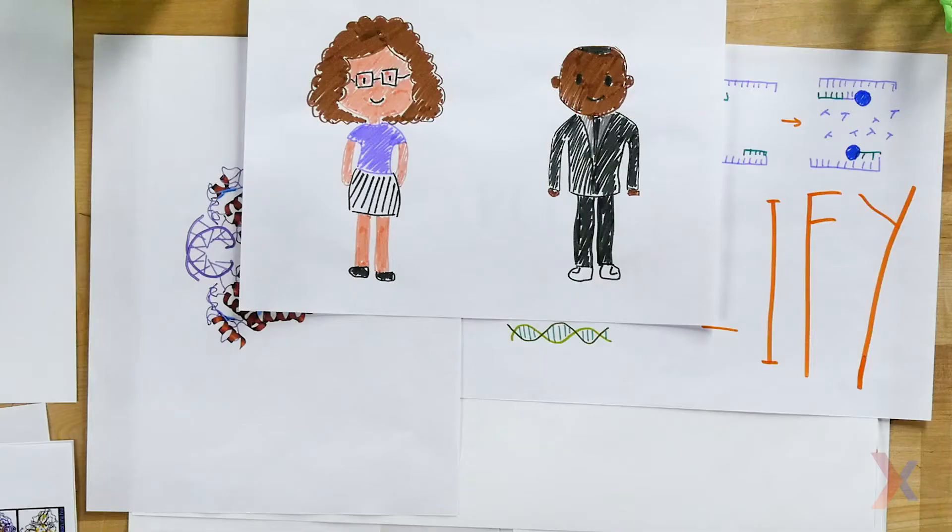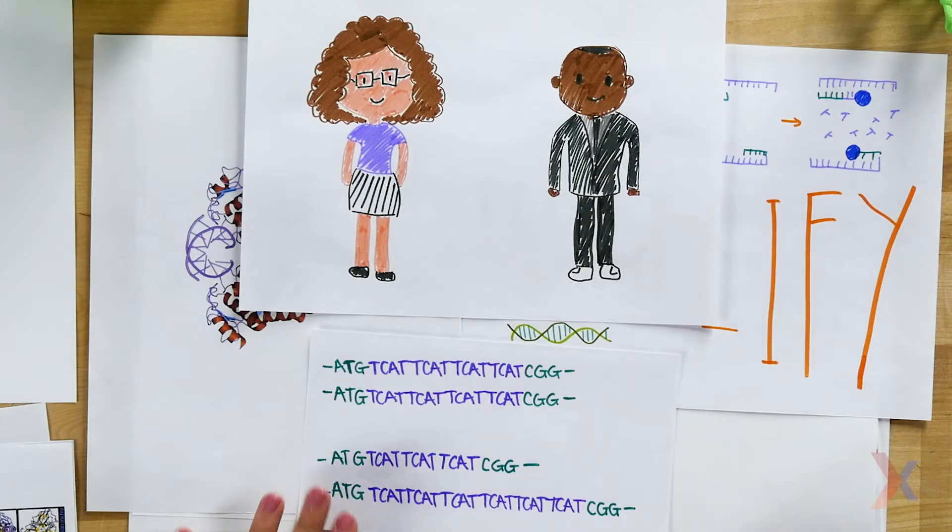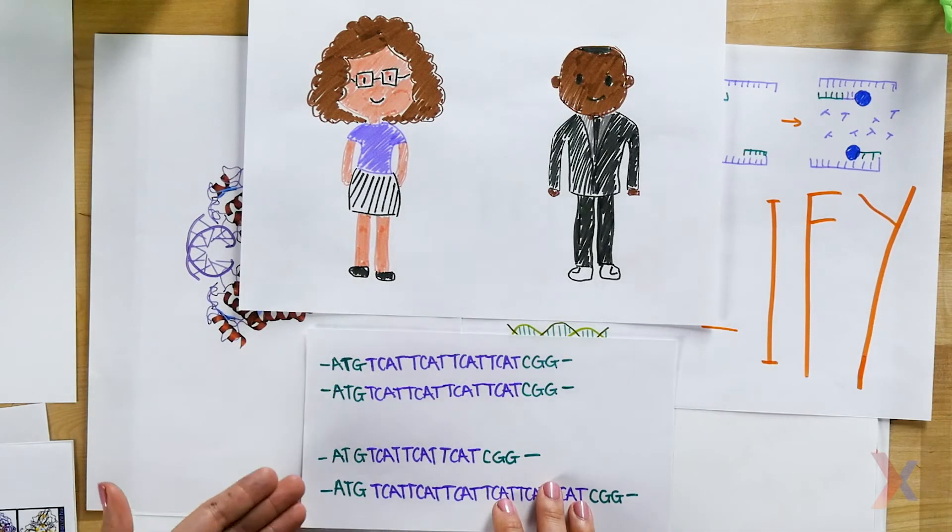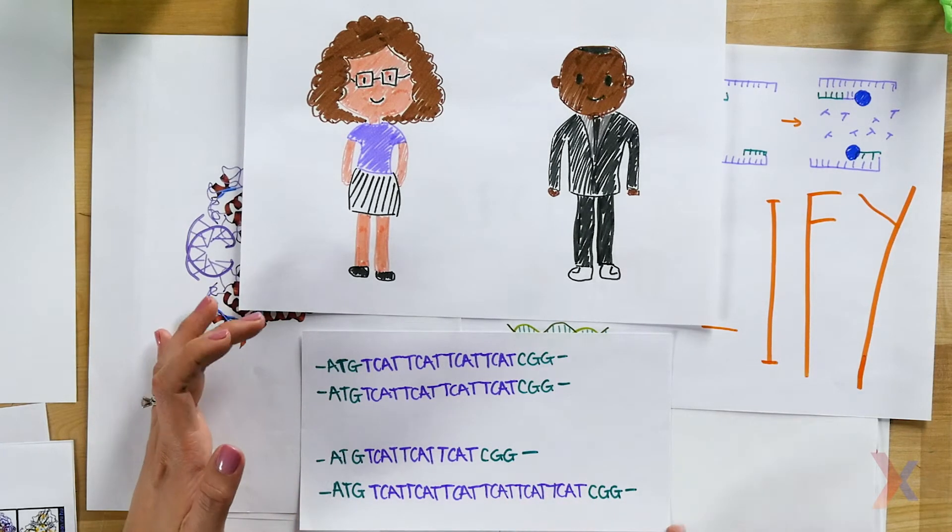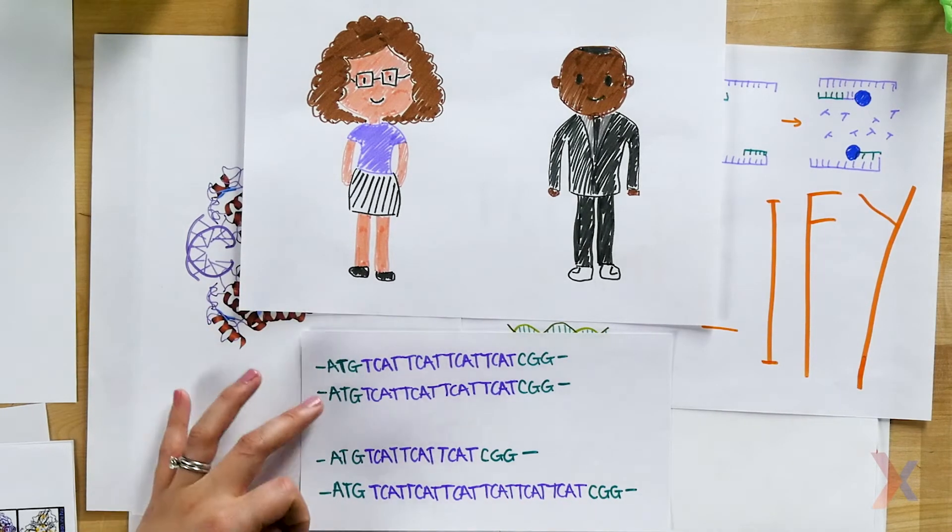You might have different fragment sizes depending on what DNA you inherited from your parents. You could analyze regions that are non-coding that can have differences like these variable number of tandem repeats, and depending on which number of repeats you inherited from your parents, your fragments of DNA will be different sizes.